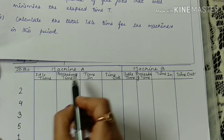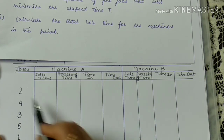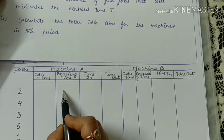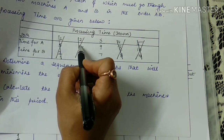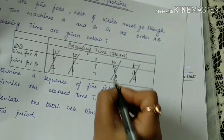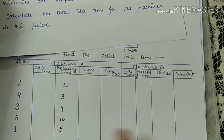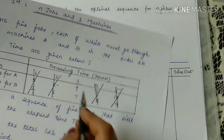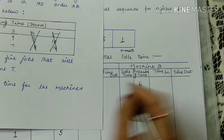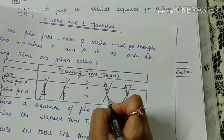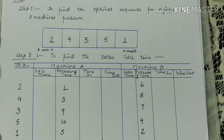Write the processing times for machine A according to the optimal sequence: job 2 takes 1 hour, job 4 takes 3 hours, job 3 takes 9 hours, job 5 takes 10 hours, job 1 takes 5 hours. For machine B: job 2 takes 6 hours, job 4 takes 8 hours, job 3 takes 7 hours, job 5 takes 4 hours, job 1 takes 2 hours.